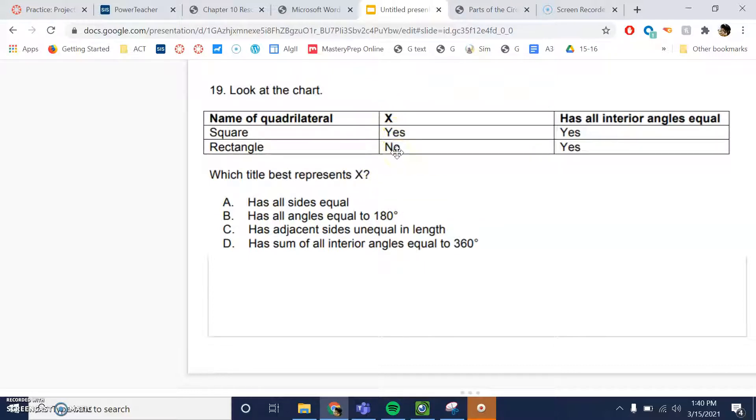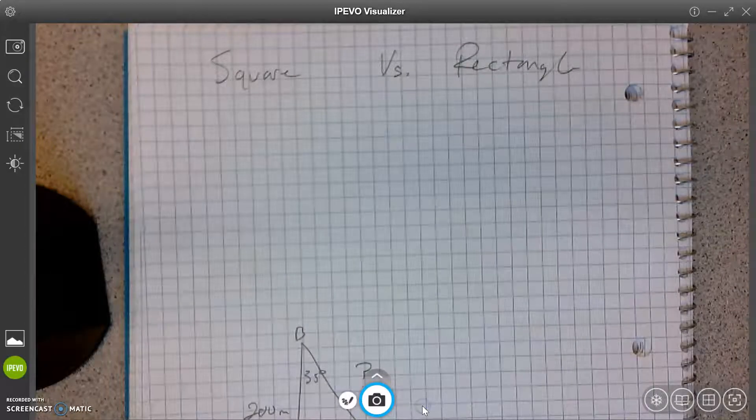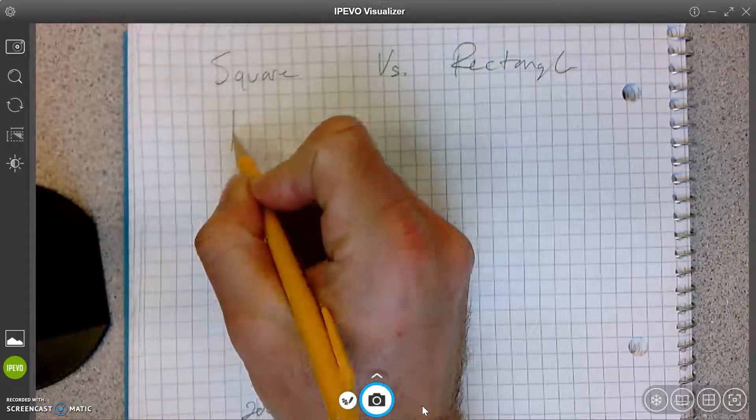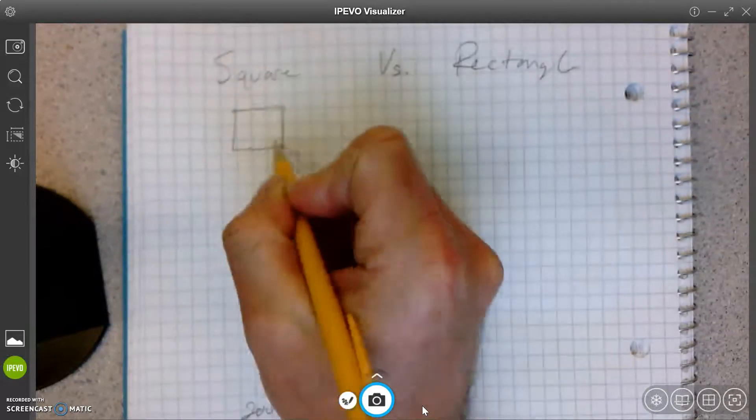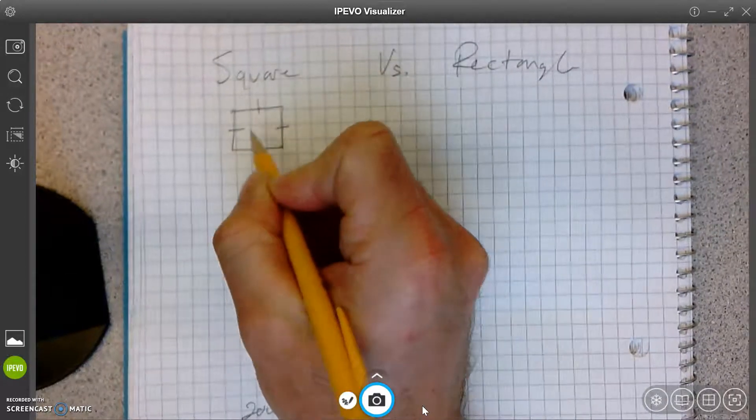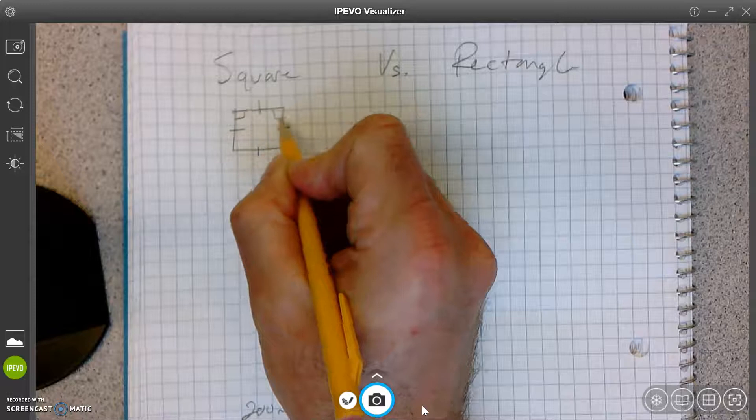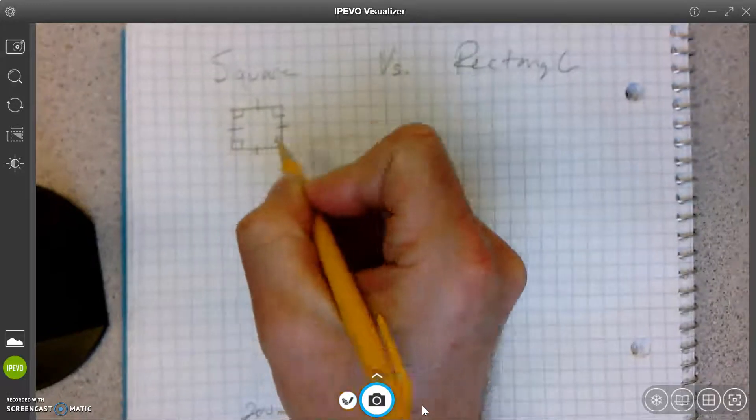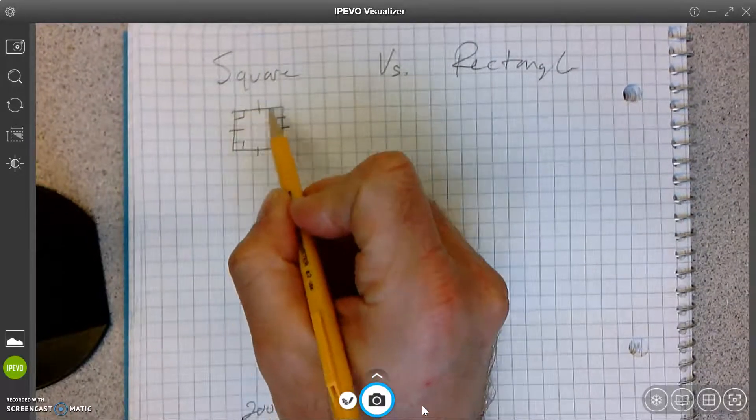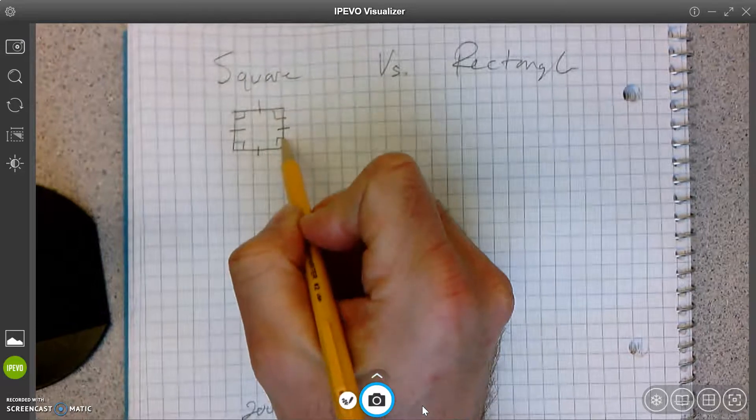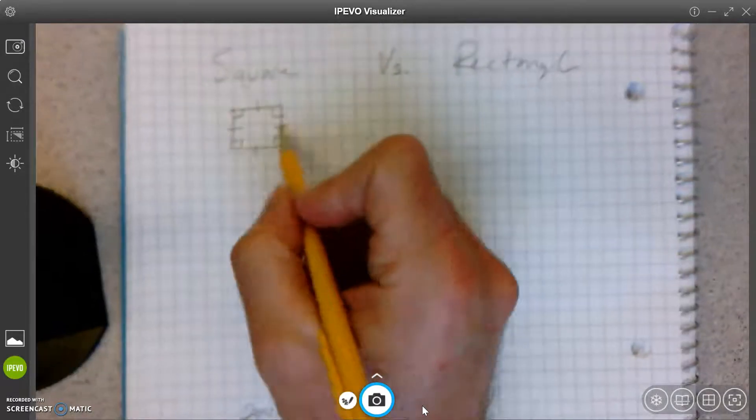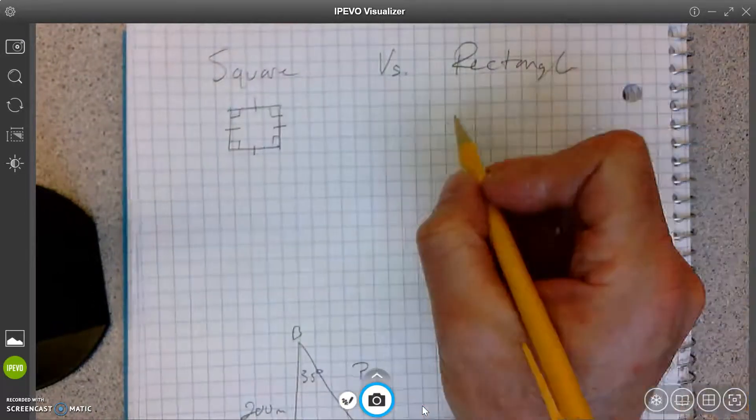Yes for square, no for rectangle. Go. All right, let's see. I don't know. Square versus rectangle. You know that a square has all congruent sides and all the angles are right angles. So that would be 90, 180, 270, 360. So all the angles add up to 360 there.